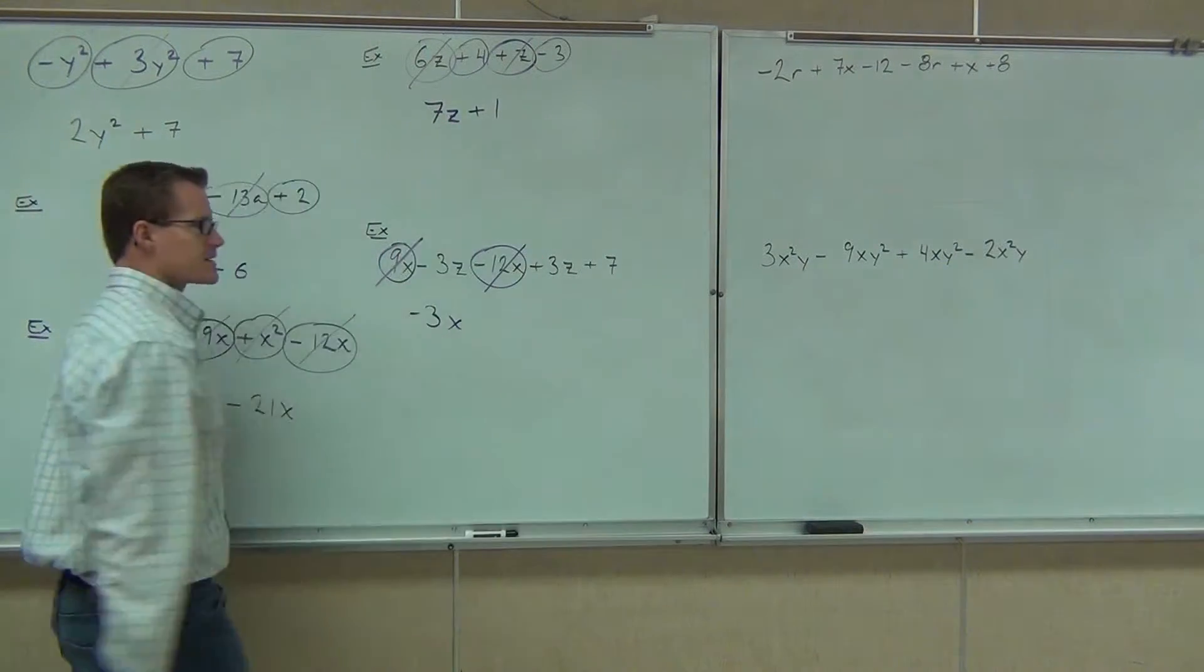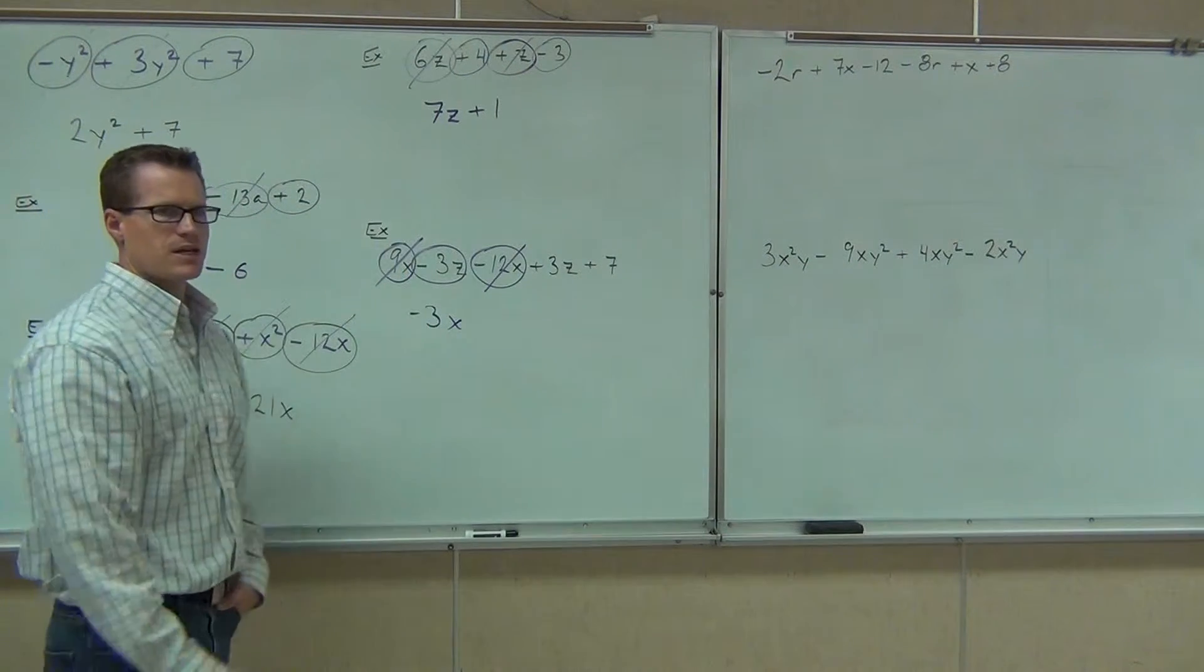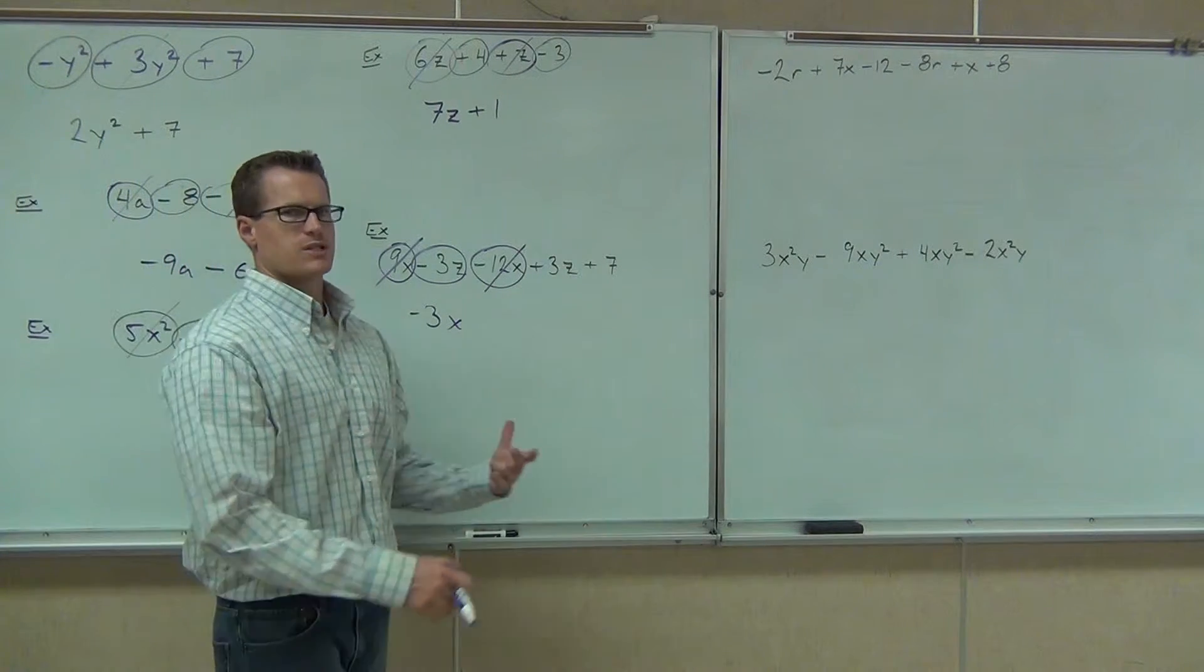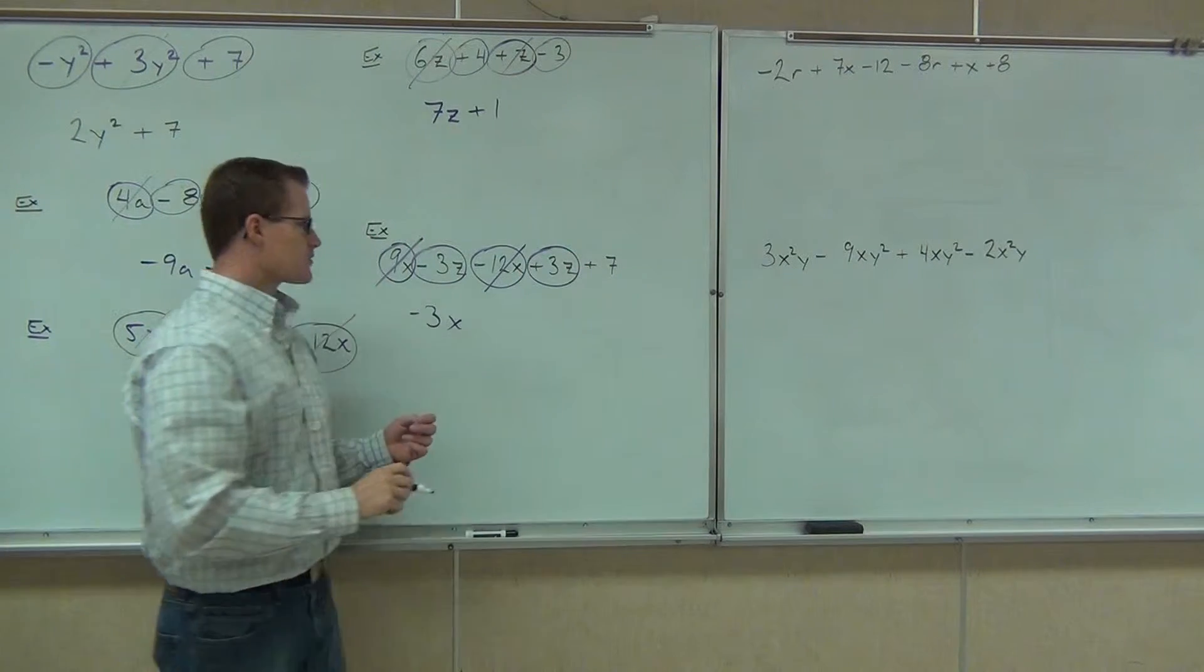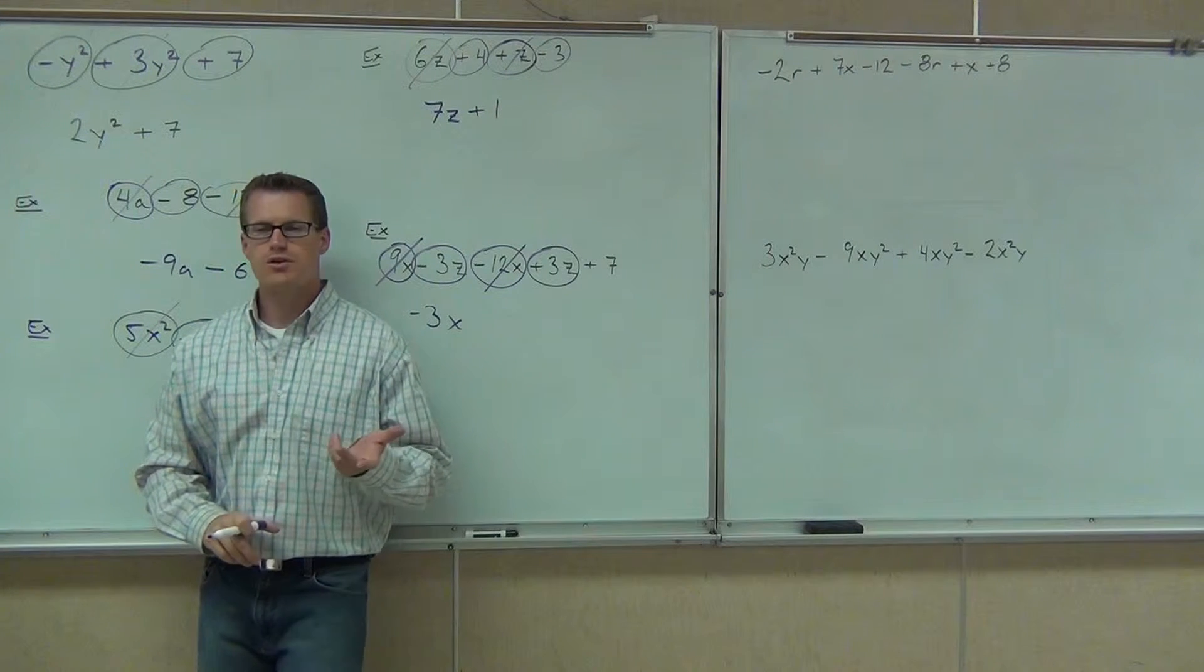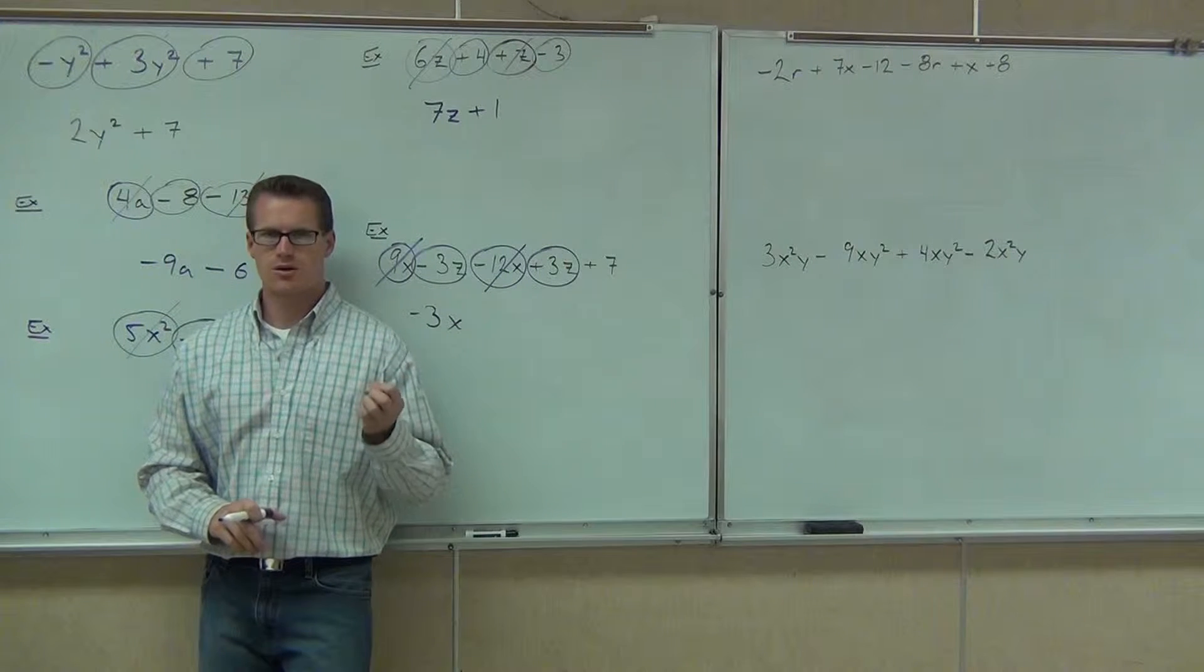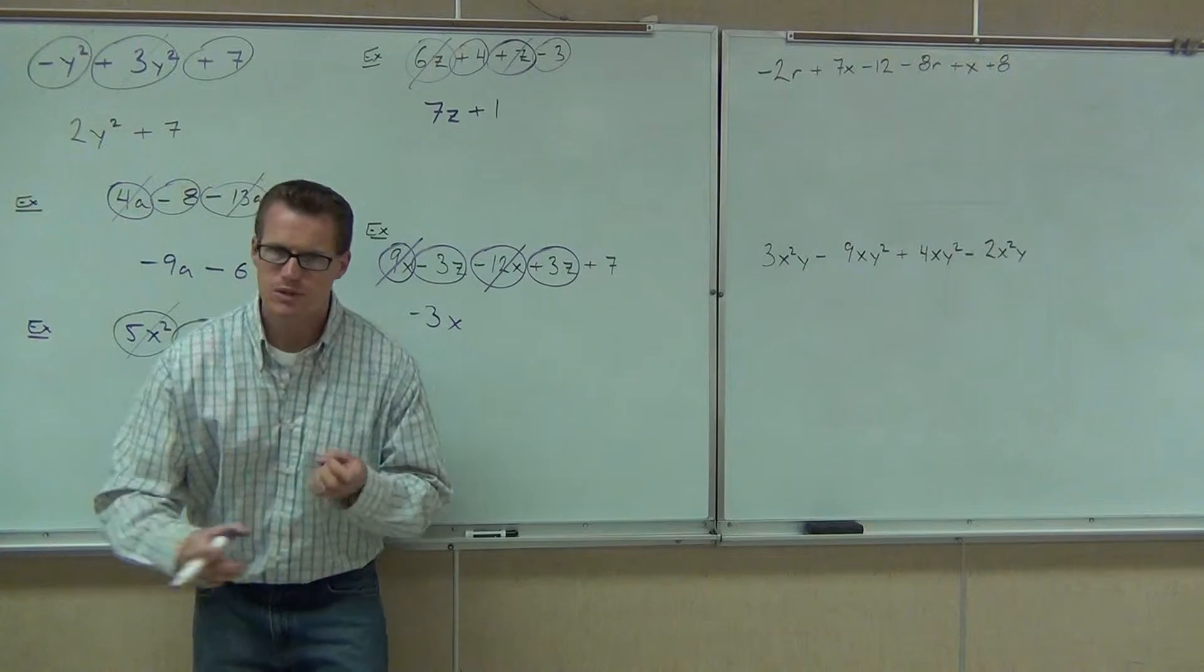Cross that out. Next thing I'm looking for is anything that matches up like term-wise with negative 3z. Do I have anything with negative 3z? Yes. We're always looking for the same variable parts. That's what gives us those like terms. So negative 3z and positive 3z, if you use the addition rule, those have different signs. You subtract, 3 minus 3 is zero.